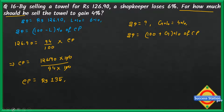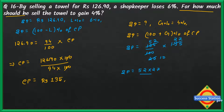Putting in the values: selling price equals 104 divided by 100 into cost price 135. Cancelling: 104 into 135 divided by 100. Simplifying step by step — 52 into 27 gives 1404 divided by 10. So the answer is rupees 140.40. This rupees 140.40 is the selling price. That is the final answer.